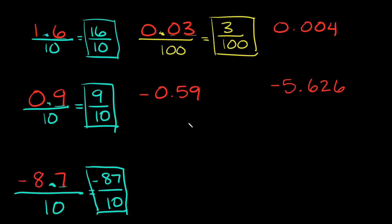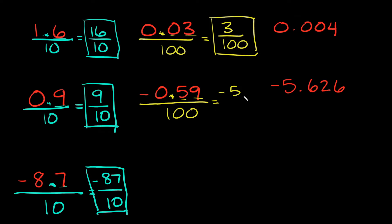Again, we have a negative number — negative 0.59. So all I'm going to do is draw a line underneath my whole number. This is the tenths, this is the hundredths, and that's where it ends — so it ends in the hundredths. That's what goes in my denominator. Then my answer is just dropping the decimal: I'm going to drop the leading zero, so it's just negative 59 over 100. That's your answer.